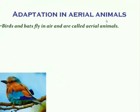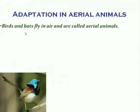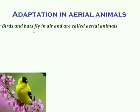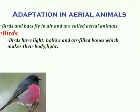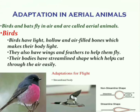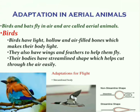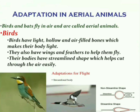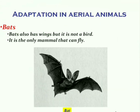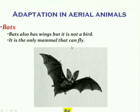Aerial animals are animals that fly in air — examples are birds and bats. Birds have light, hollow, air-filled bones which make their body light. They also have wings and feathers to help them fly, and their bodies have a streamlined shape that helps them cut through the air easily. Apart from birds, bats also fly because they have wings, but a bat is not a bird — it is the only mammal that can fly.